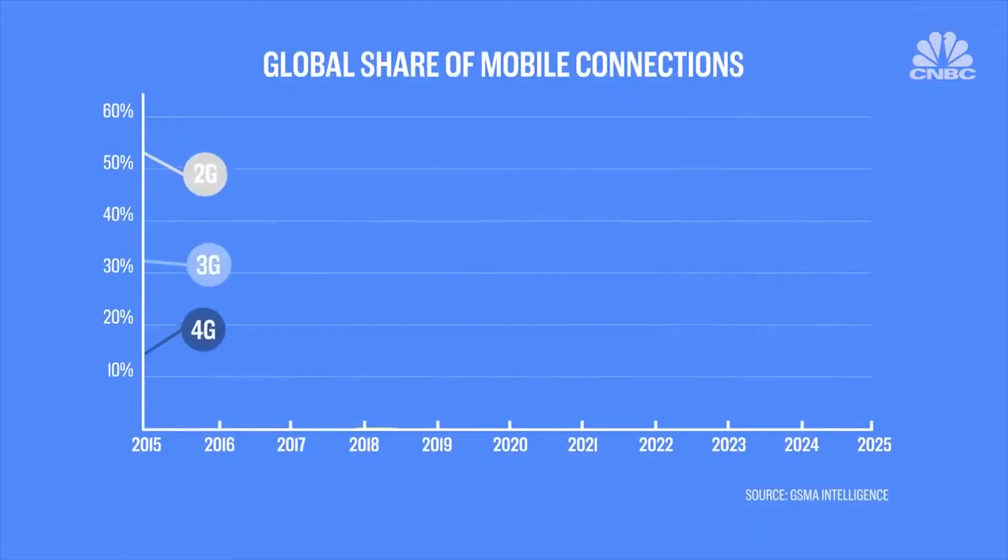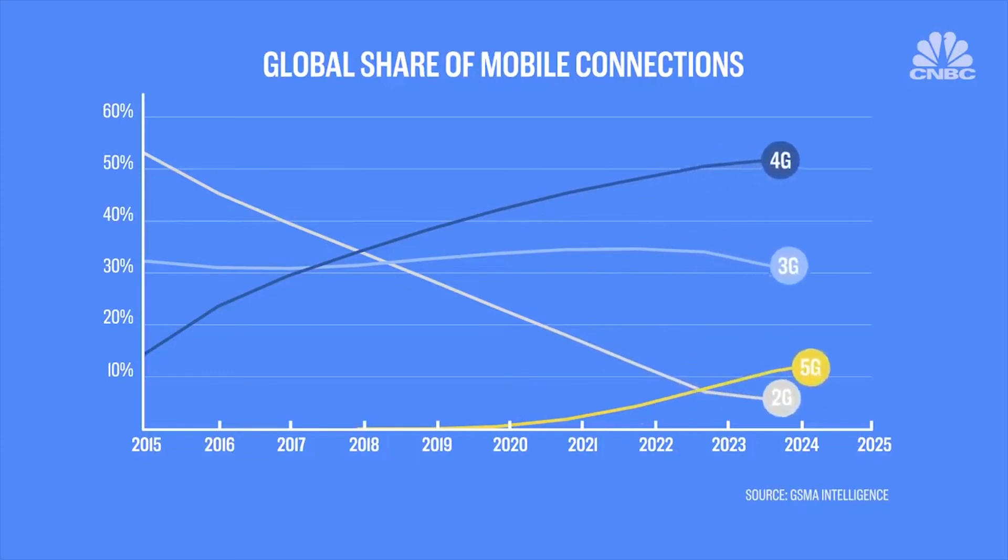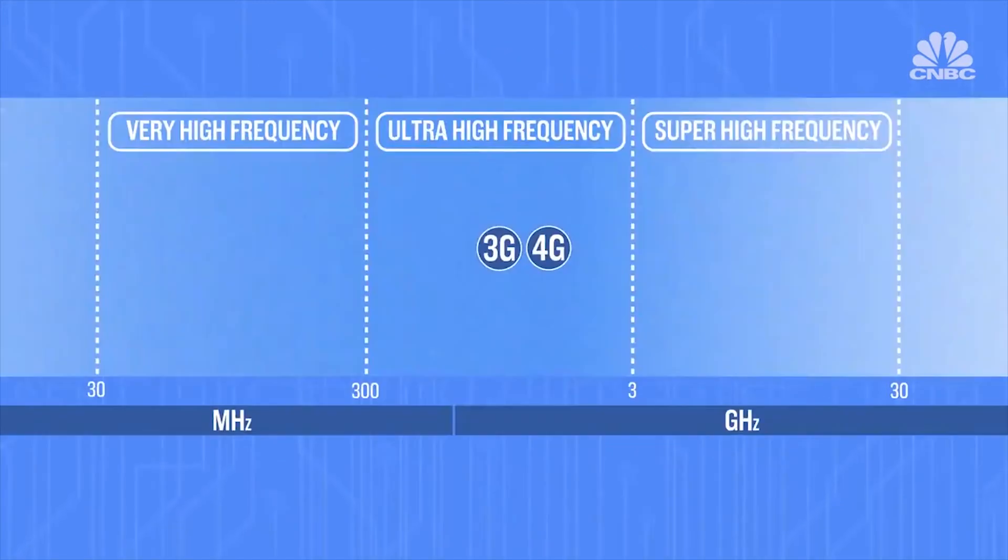But all these technologies will come at a price. 3G and 4G were relatively cheap, as countries were able to roll them out on existing bands of frequencies. For 5G to work properly, it needs a frequency with much bigger bandwidth, which would require brand new infrastructure.